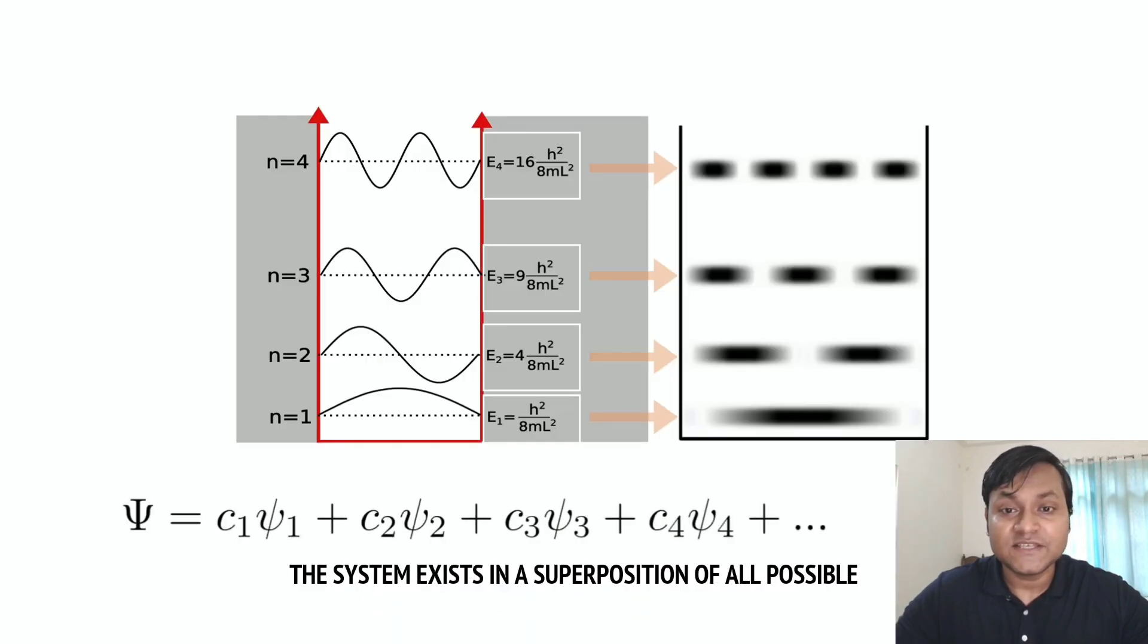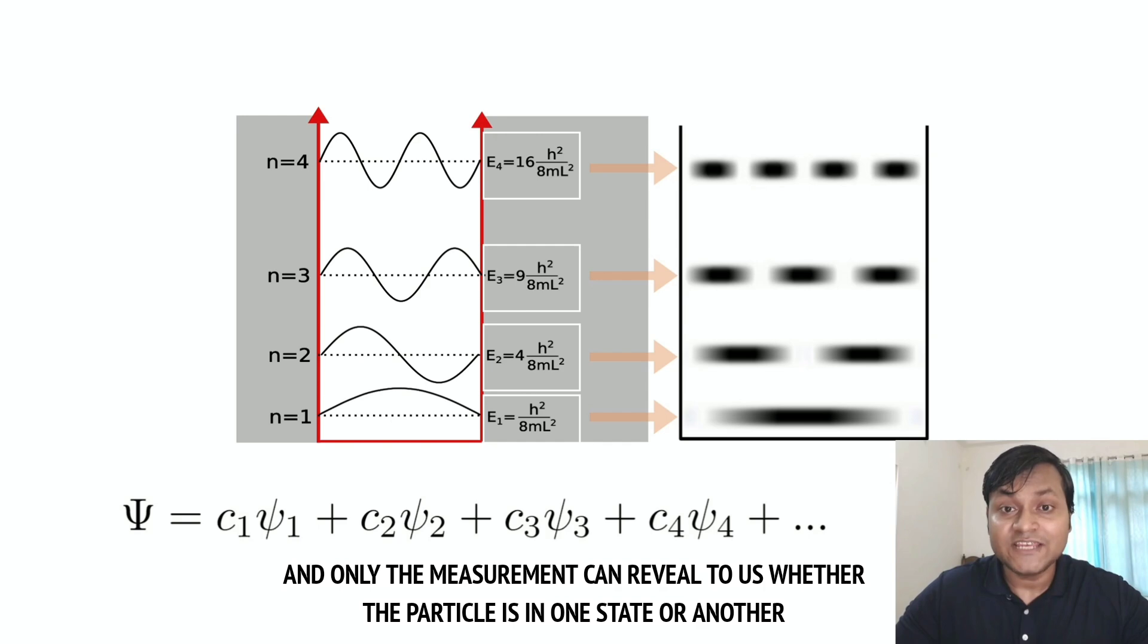Before making a measurement, the system exists in a superposition of all possible Schrodinger equation solutions. And only the measurement can reveal to us whether the particle is in one state or another.